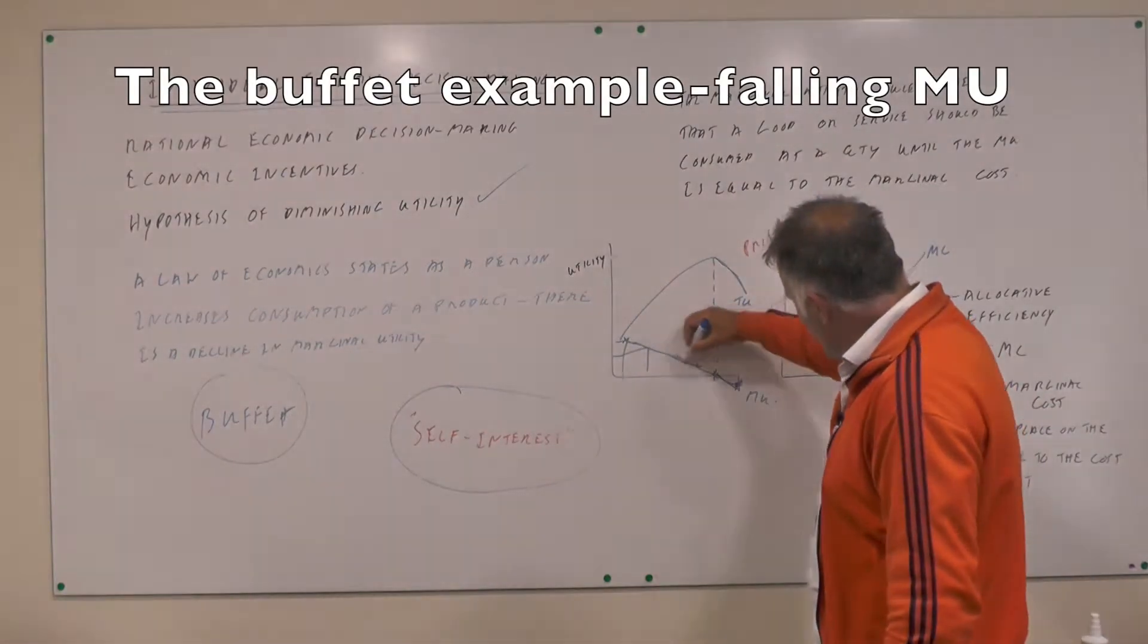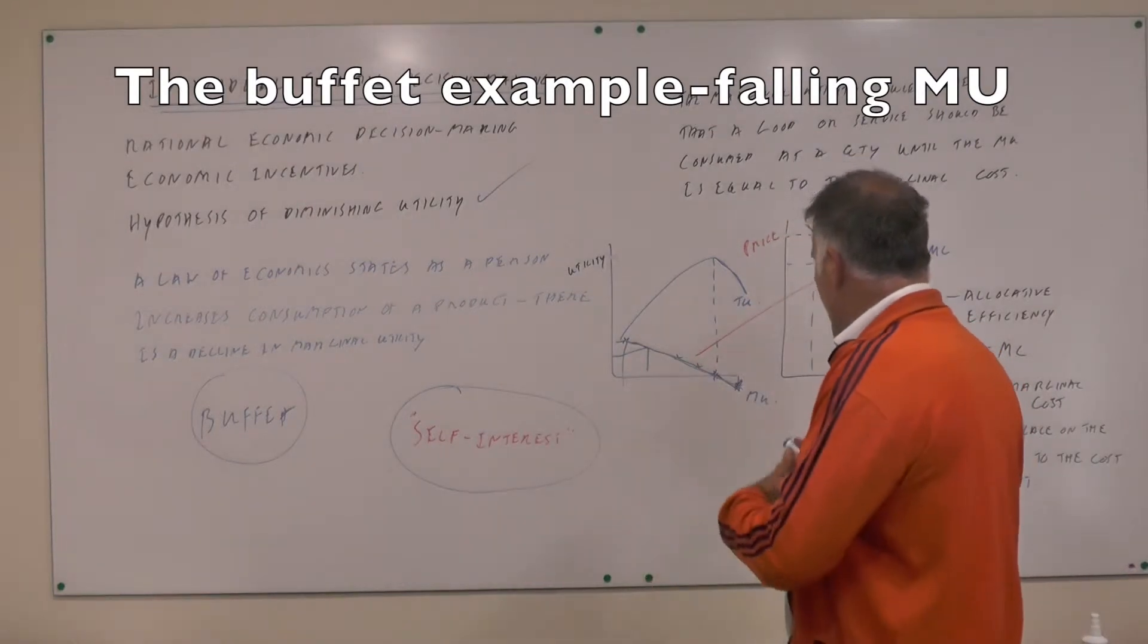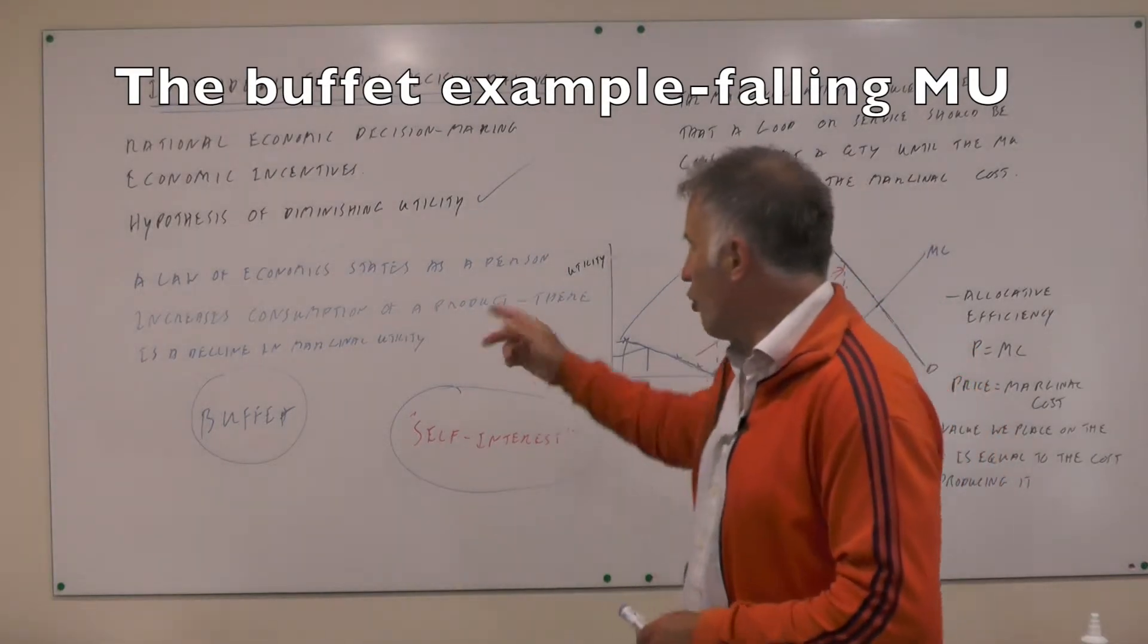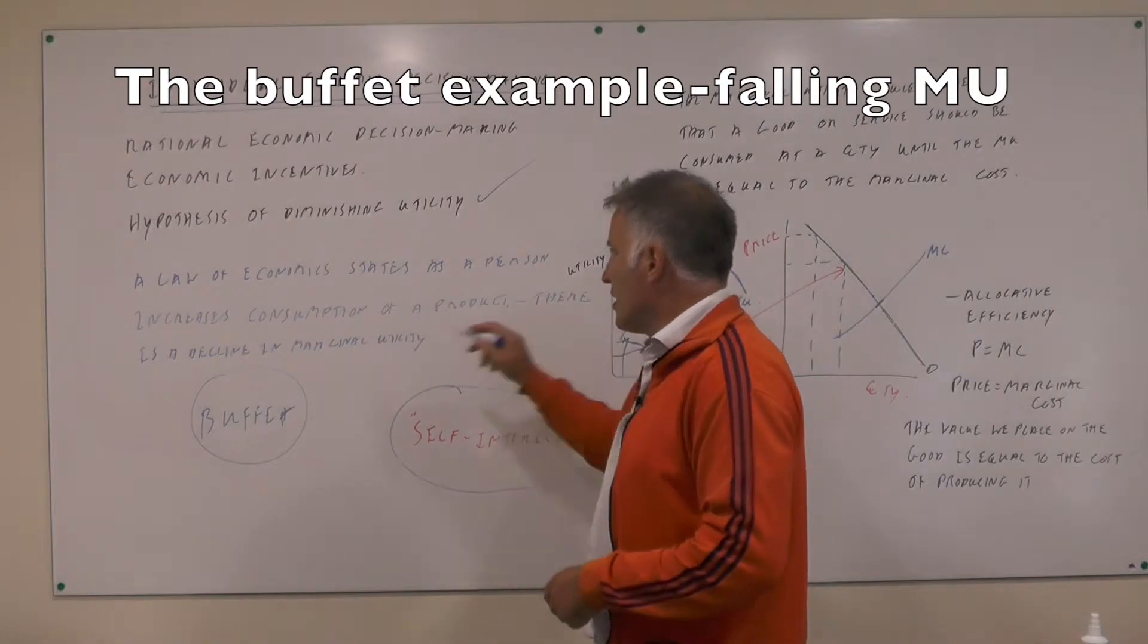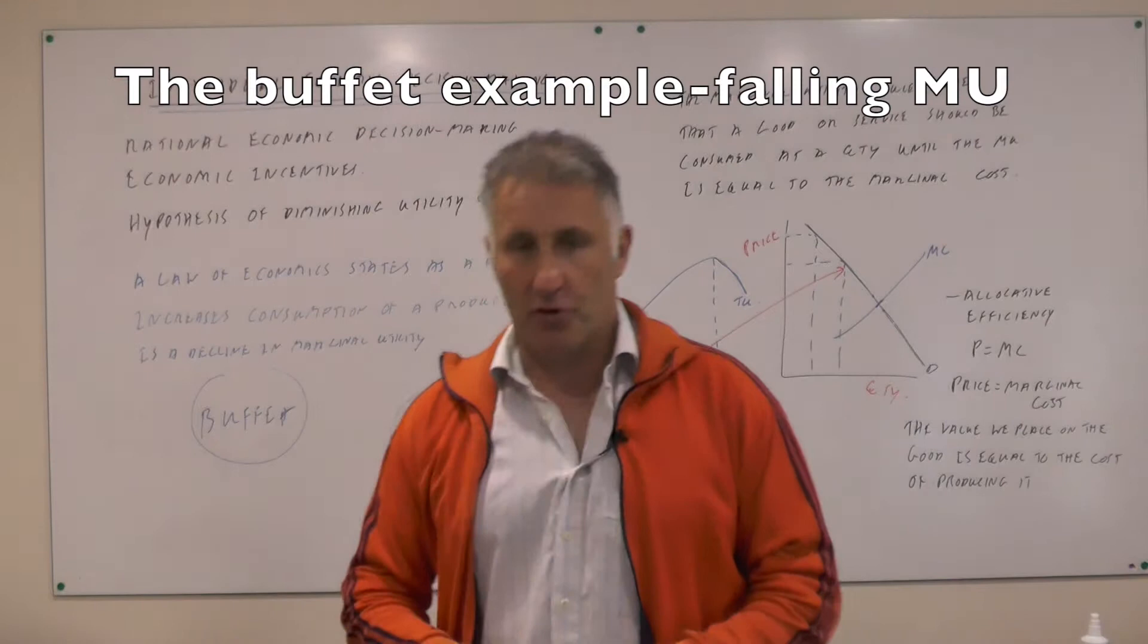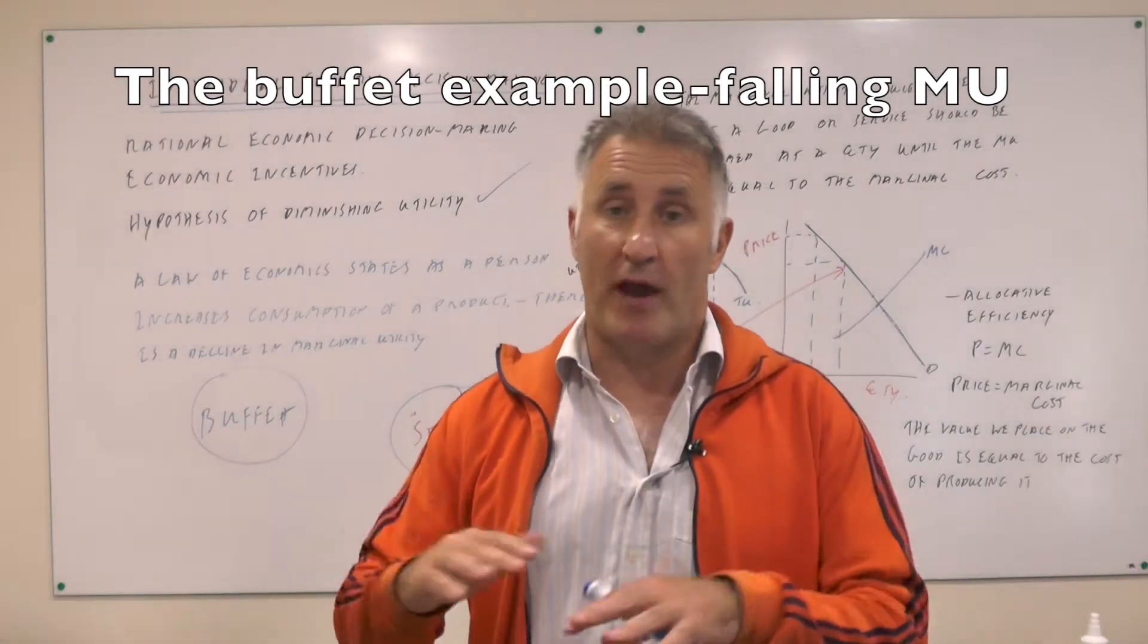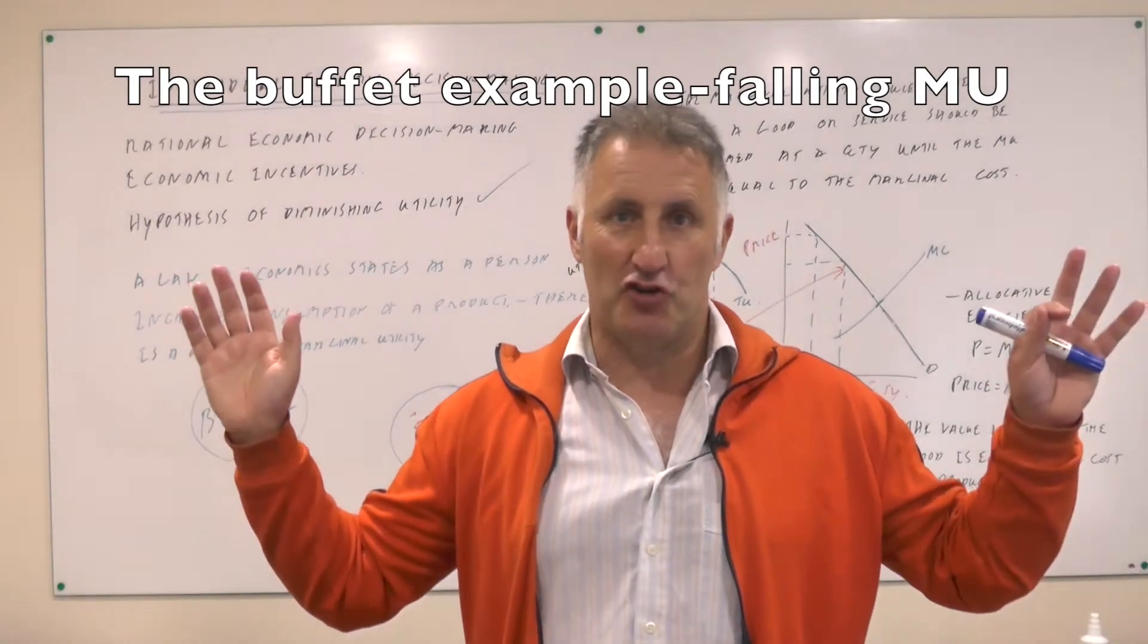This is the marginal utility falling down here, and that relates to the demand which I'm going to explain in a second. A law of economics states that as a person increases consumption of a product, there is a decrease in marginal utility. Well, of course there is. If you go for a buffet where you pay £15 and can eat as much Chinese food as you like...